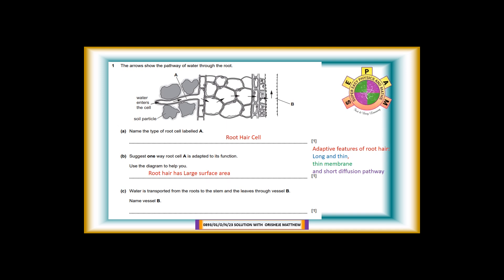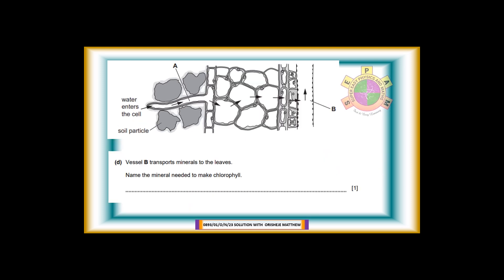Question 1c. Water is transported from the roots to the stem and the leaves through vessel B. Name vessel B. For one mark. Answer: Vessel B is xylem vessel. Just for additional information, the phloem vessel transports food nutrients from the leaves.